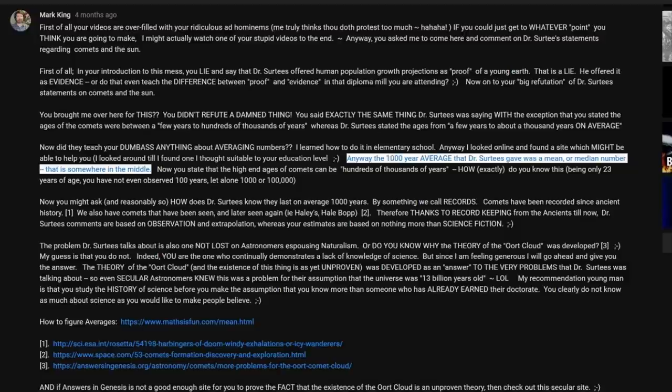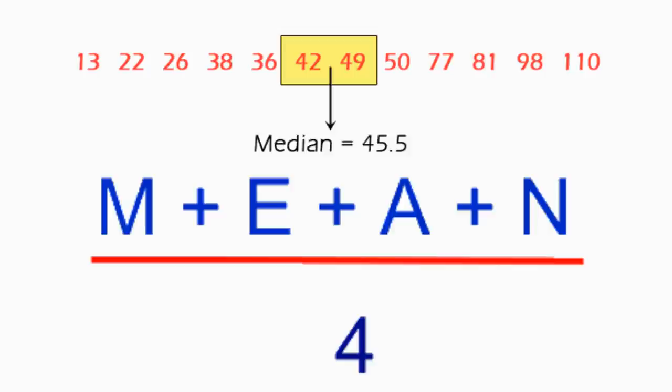Wait, which is it? A mean or median? Those are different things. Maybe you are the one who needs that website. But, yet again, it does not matter. It makes no sense to find an average age for comets. Here is an analogy to explain why.